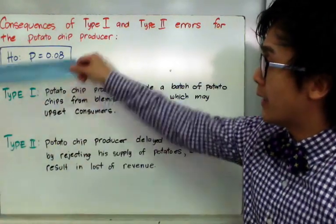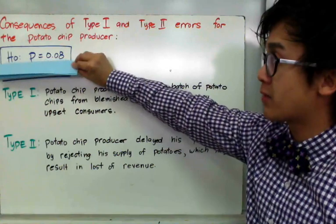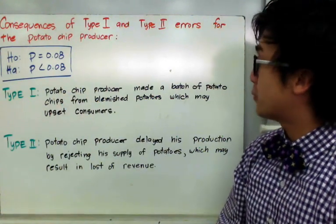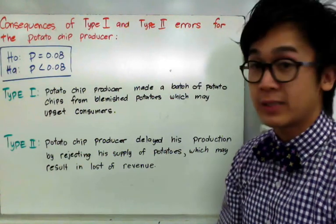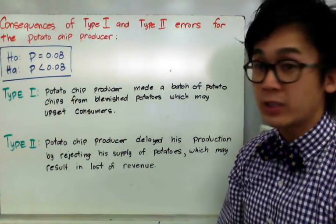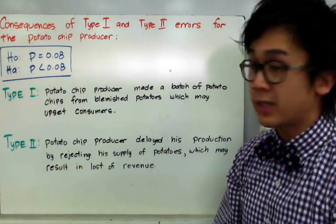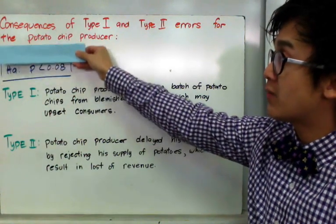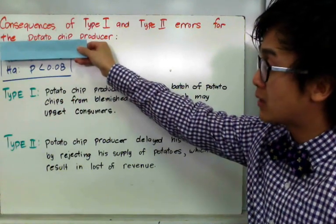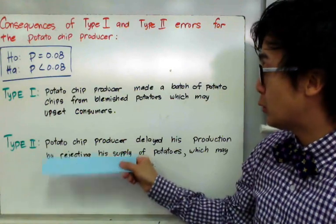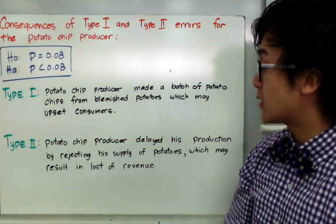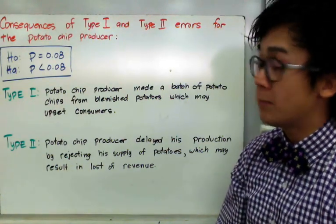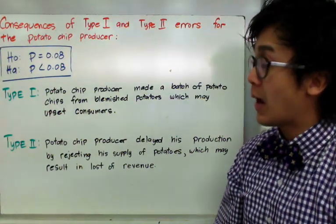For a type 1 error — rejecting the null hypothesis even if it's true — the consequence is that the potato chip producer made a batch of chips from blemished potatoes, which may upset the consumer. For a type 2 error — not rejecting the null hypothesis even if it's false — the consequence is a delay in production by rejecting a good supply of potatoes, which may result in a loss of revenue.